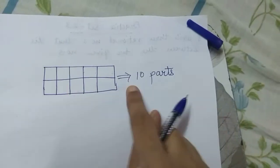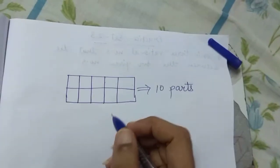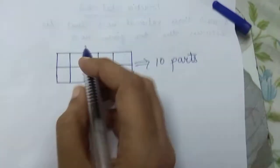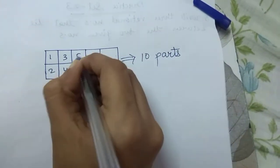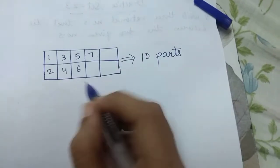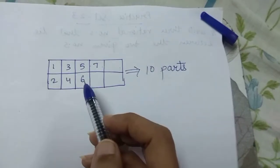Now, among these 10 parts, there is 7 out of 10 parts which need to be painted. So let me count 1, 2, 3, 4, 5, 6, and 7. These parts need to be painted.